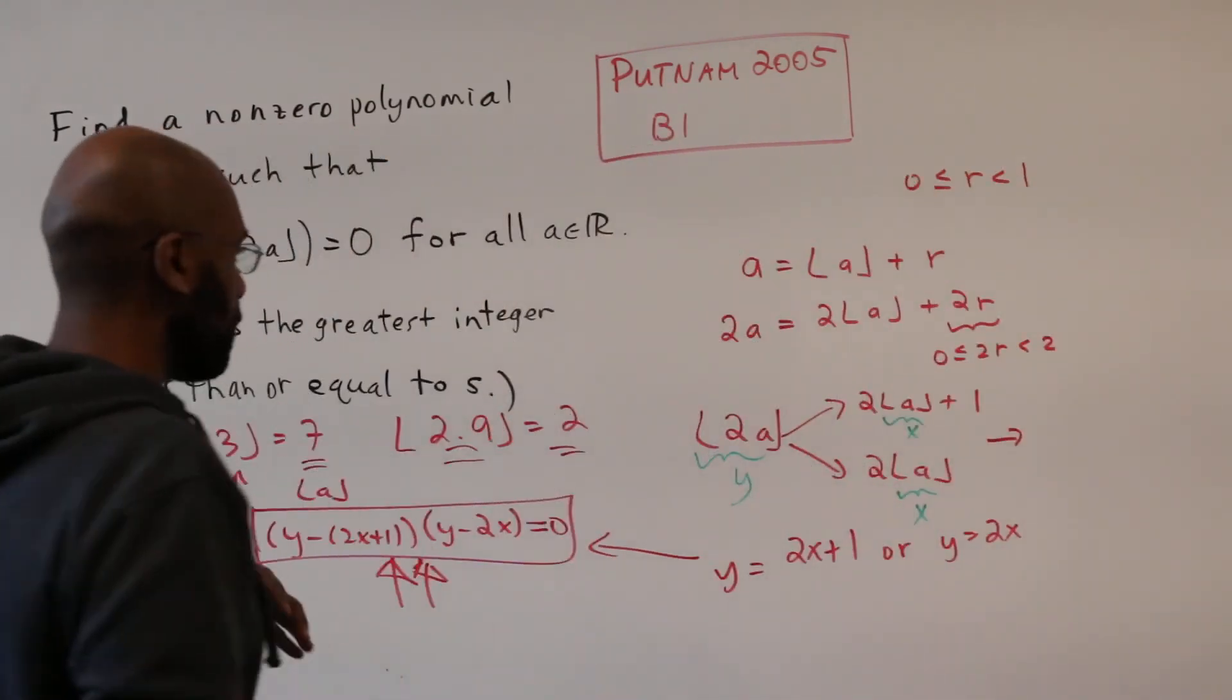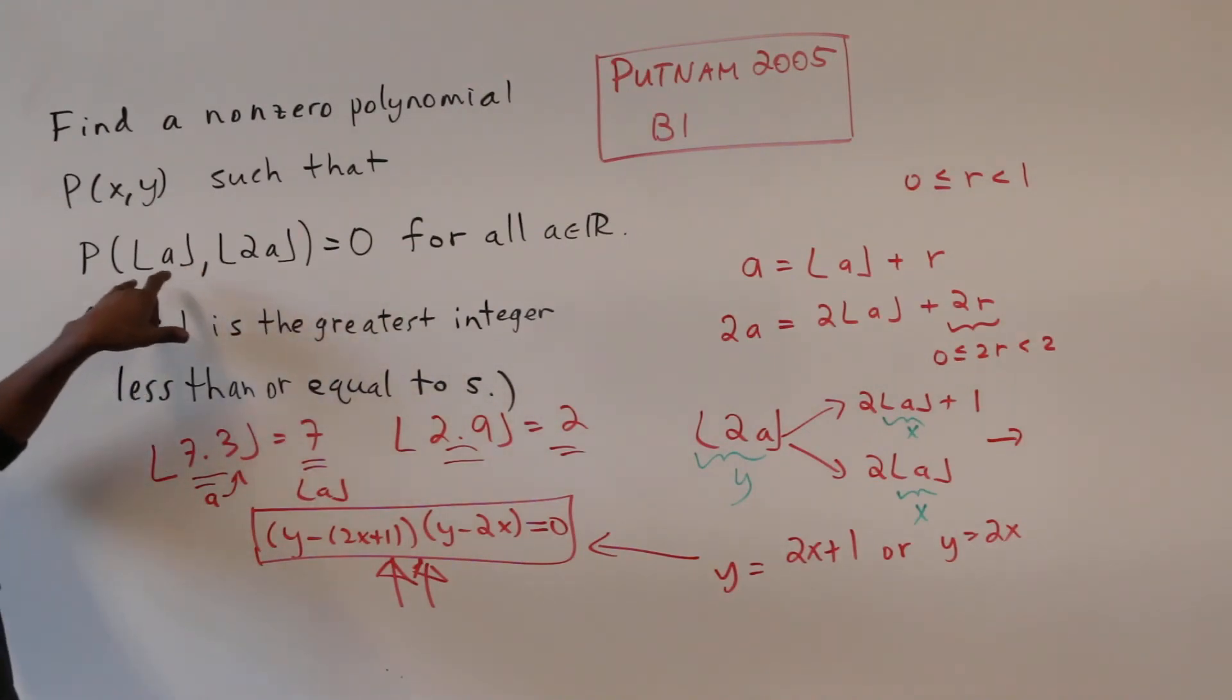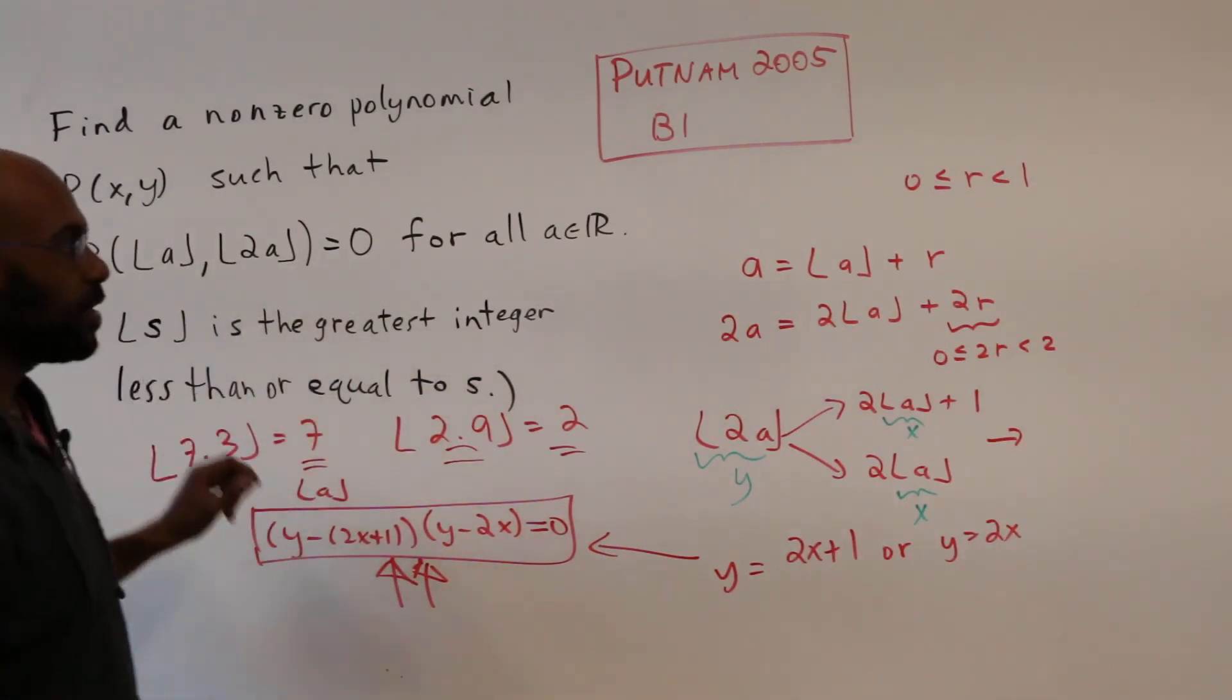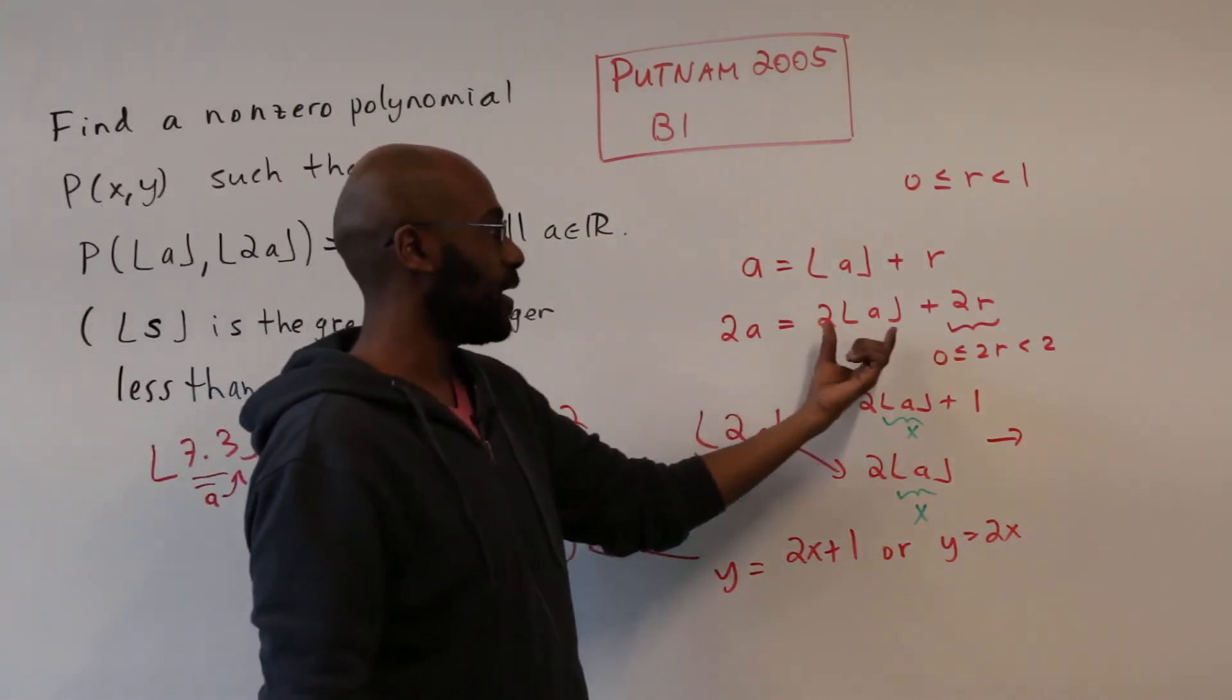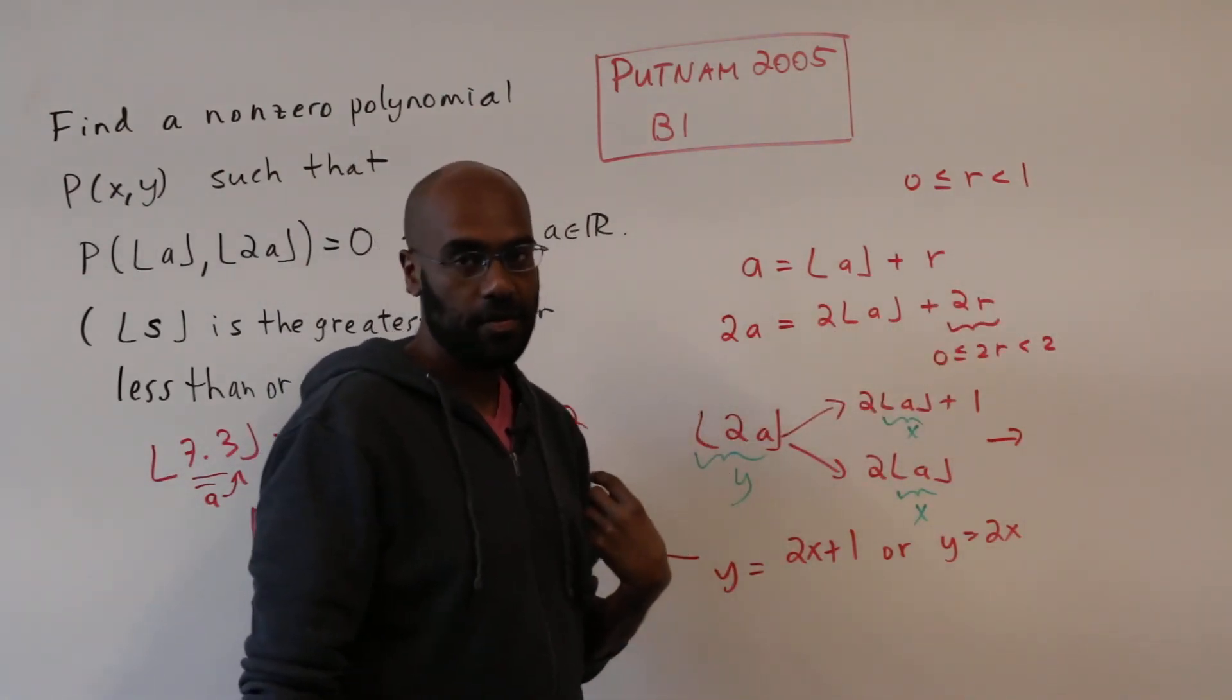So a cool way to go about this problem and really what it does is relate the floor of 2a to twice the floor of a, recognizing that 2a is twice the floor of a plus something that is just a little bit higher than that.